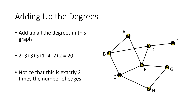One interesting thing: if I add up all of those numbers — two plus three plus three plus three and so on — I get 20. And it turns out that 20 is exactly two times the number of edges in this graph. Let's verify that by counting the edges: one, two, three, four, five, six, seven, eight, nine, ten. And 20 is 2 times 10. Is that just a coincidence?